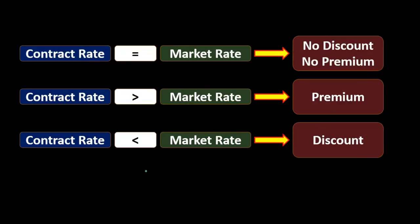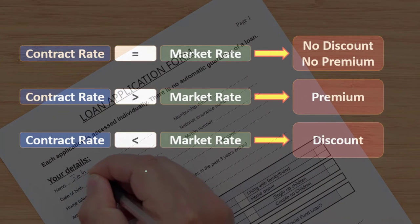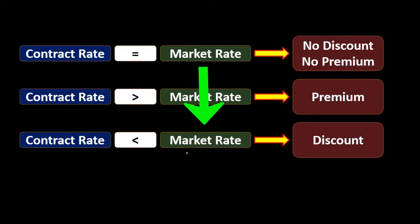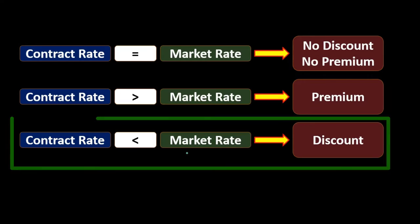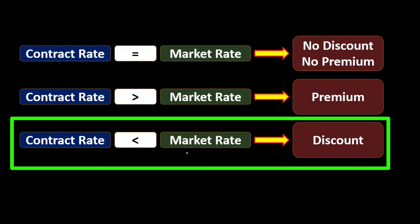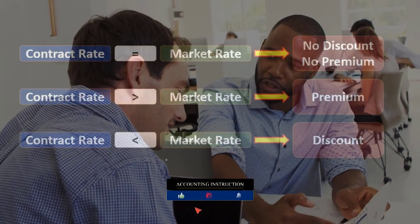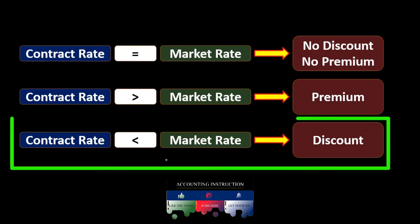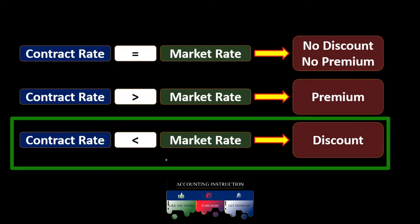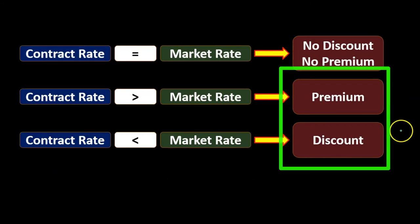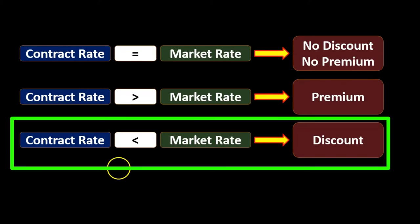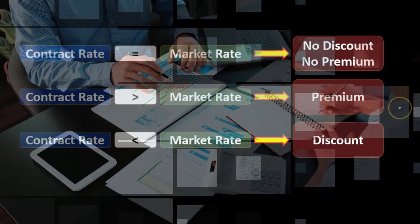Note that with a regular loan, the thing we negotiate is the market rate — we want a hundred thousand dollars and we negotiate on the interest we pay back. With bonds, we can't adjust the contract rate to agree with the market rate because the bonds have already been produced. Therefore, the thing we can change is the amount of money we receive upfront for the bonds, making up the rate difference by issuing the bond at a premium or a discount. These premiums and discounts are a result of the difference between the market rate and the contract rate.